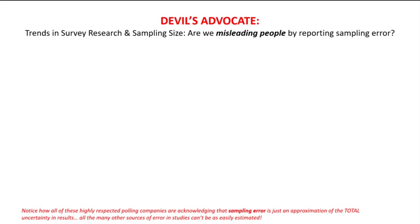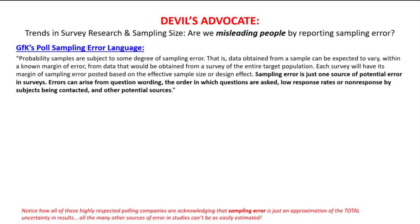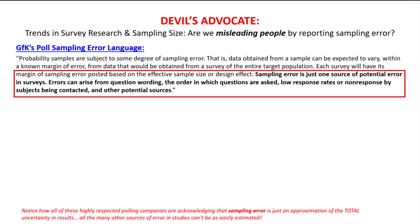As we wrap up our conversation about sample size calculation, I should point out that sample size calculations only allow us to assess one type of uncertainty: specifically, sampling error. Look at the language used by some of the most famous gold-standard polling companies in the United States. GFK notes that sampling error is just one source of potential error in surveys — errors can also arise from question wording, the order in which questions are asked, low response rates, non-response, and other potential sources.